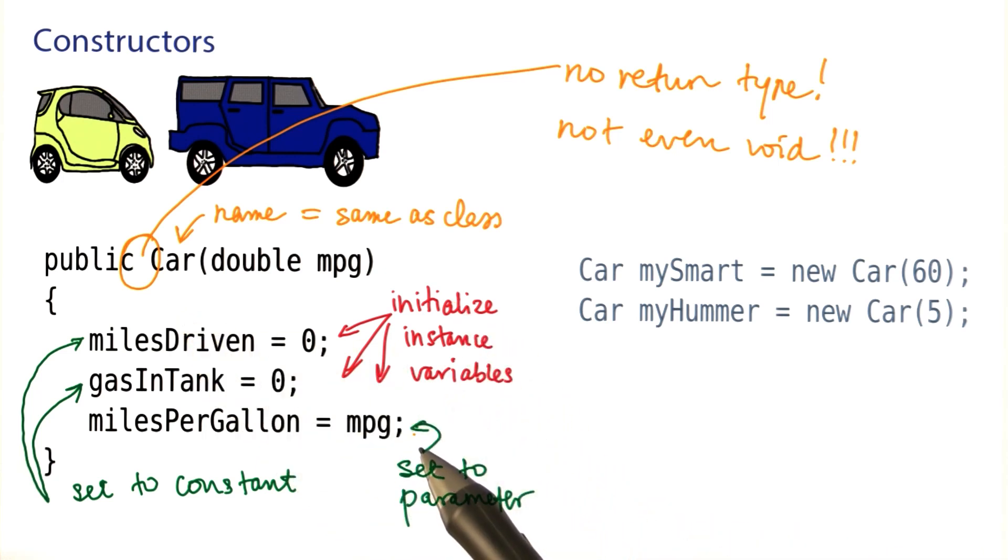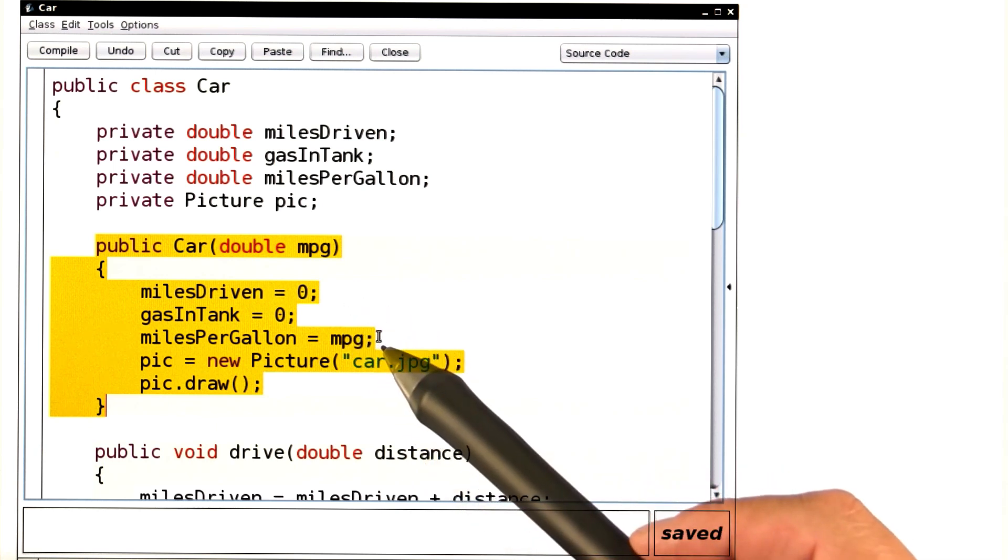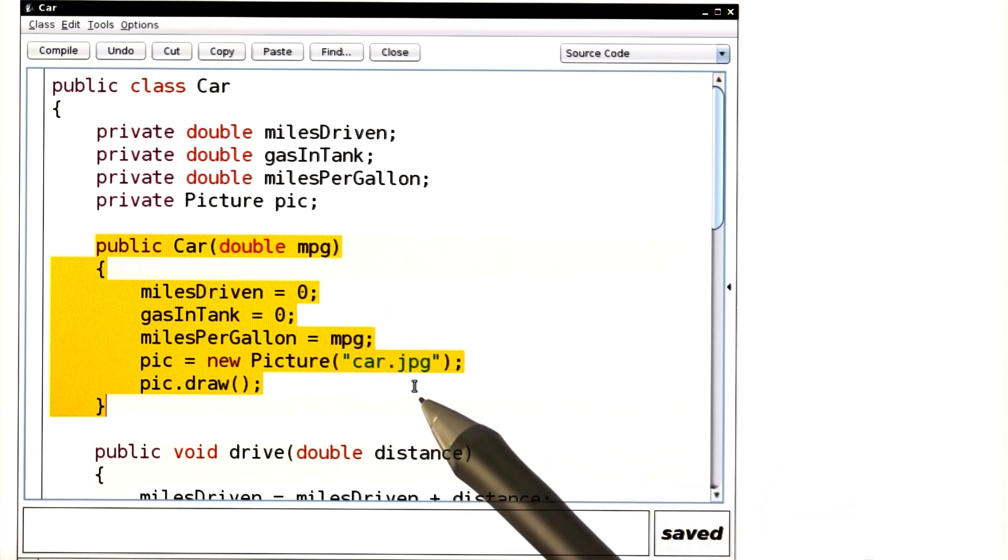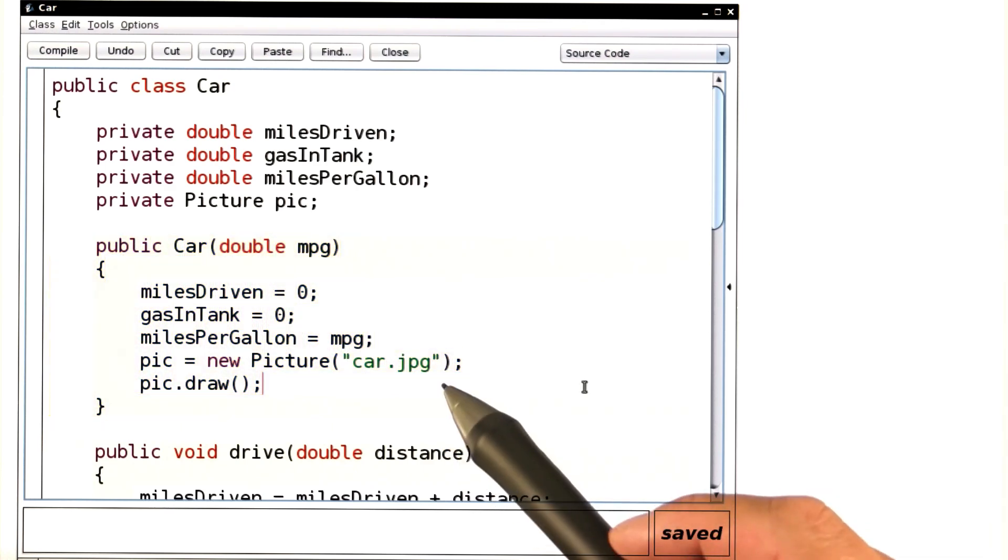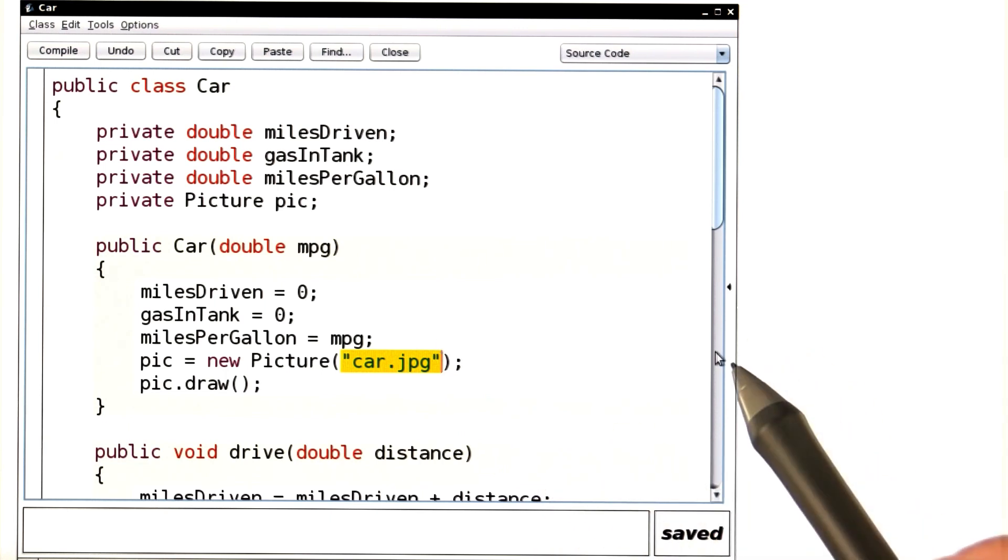You can have more than one constructor and you'll get a chance to write one right now. Here is our constructor in BlueJ. You see the statements that we had just before, together with a couple of statements that set the car's picture. Now, this constructor always takes the same picture to construct a car. It would be much nicer if we could specify a different picture for every car. So, let's do that.